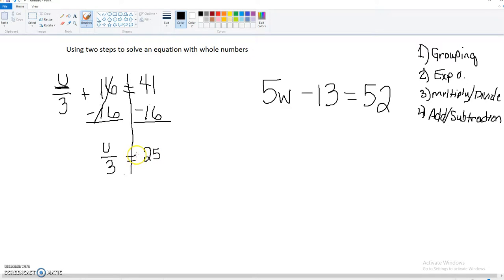Now notice I said u divided by 3. So the opposite of that would be to multiply. So we're going to multiply both sides by 3.